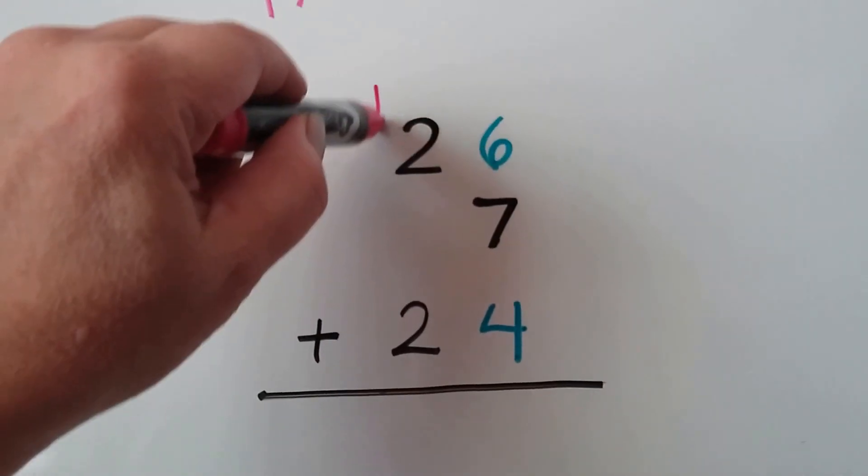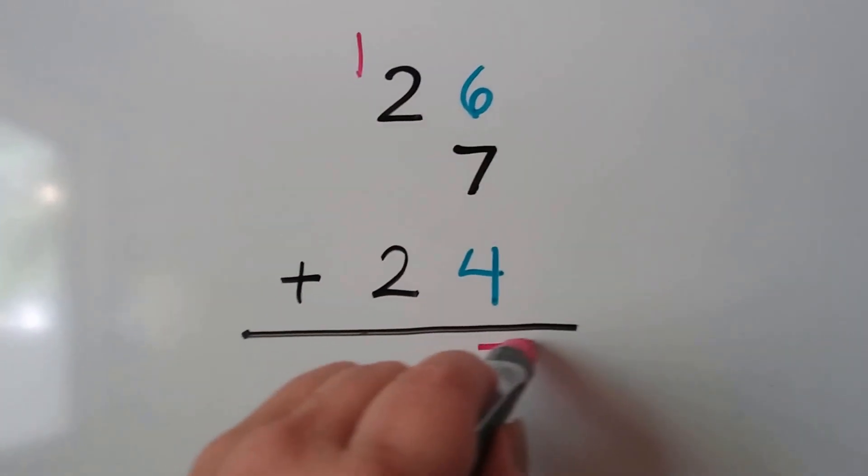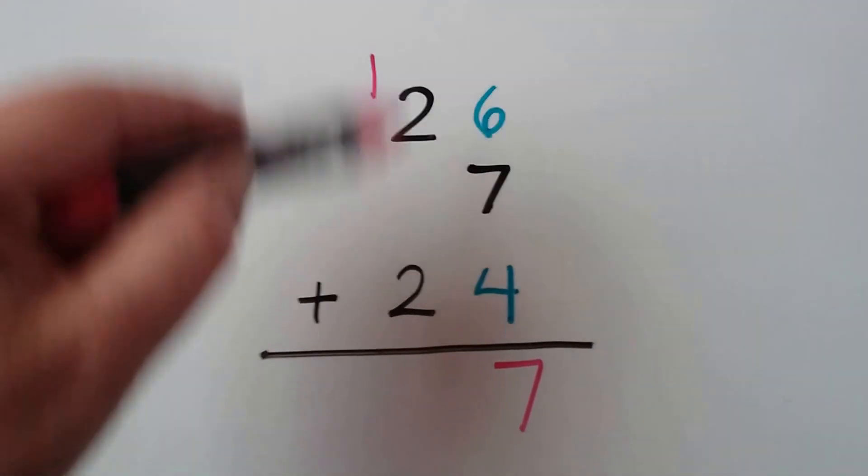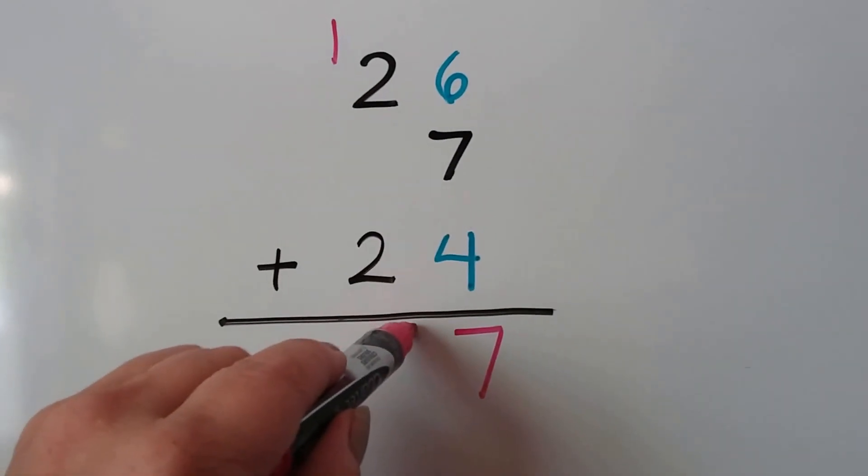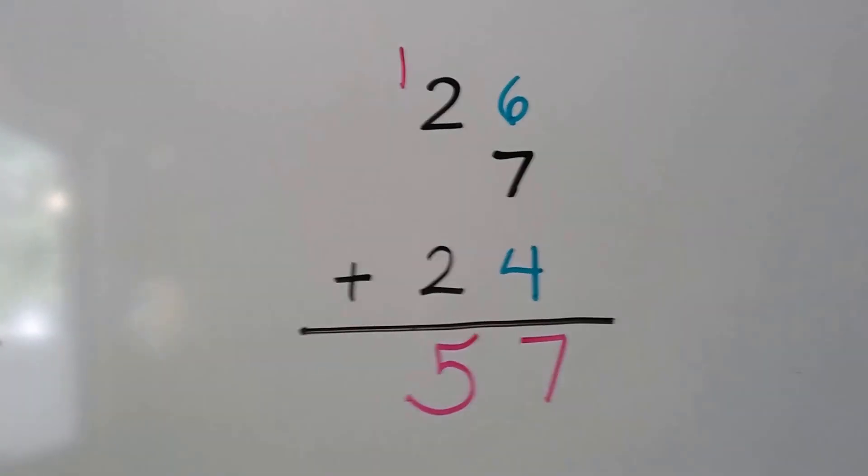We put our regrouped 1 in the tens place. We put our 7 down here. We add the tens and we have 3, 4, 5.